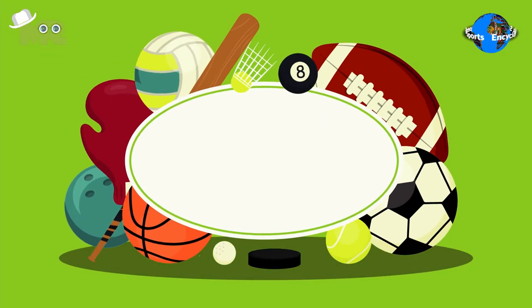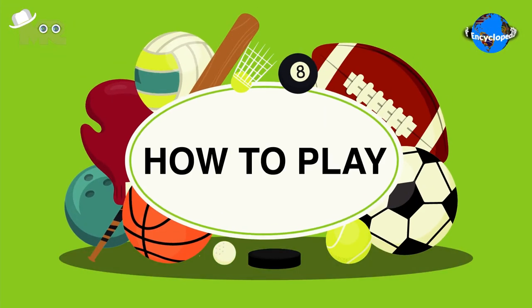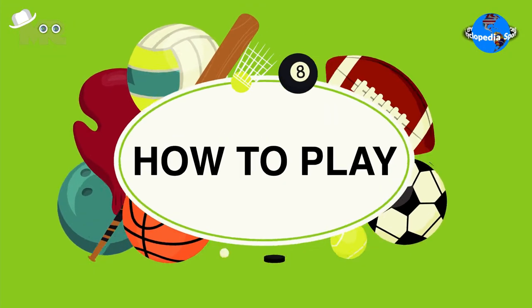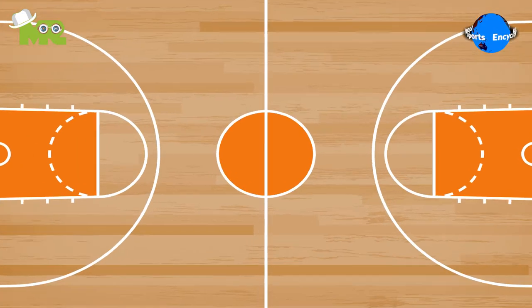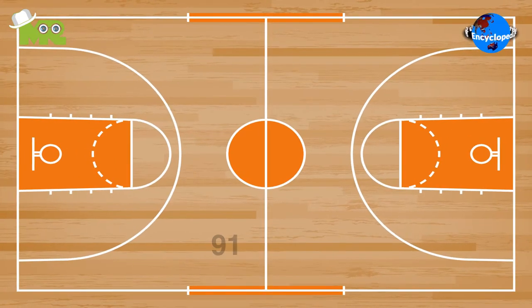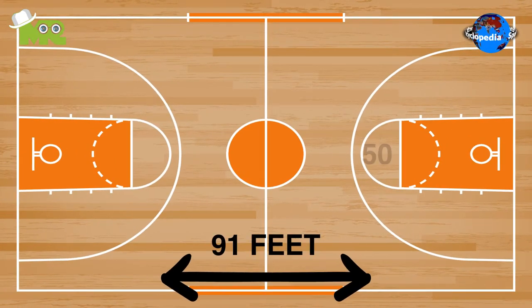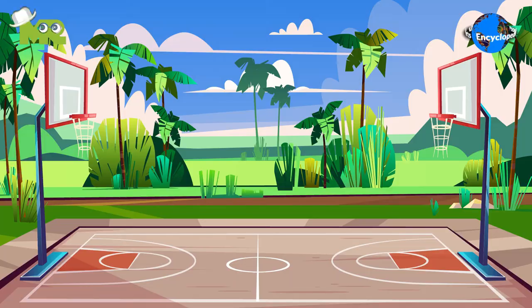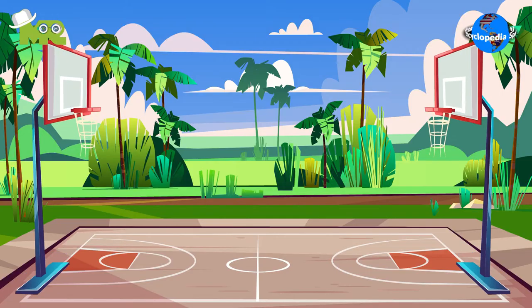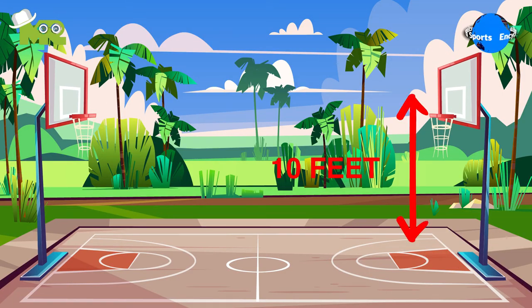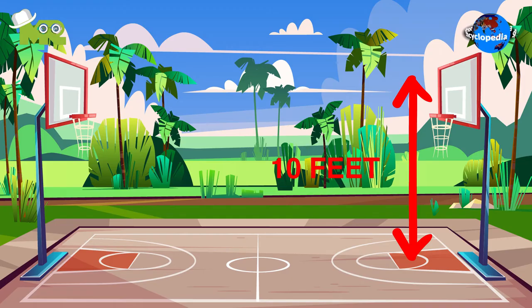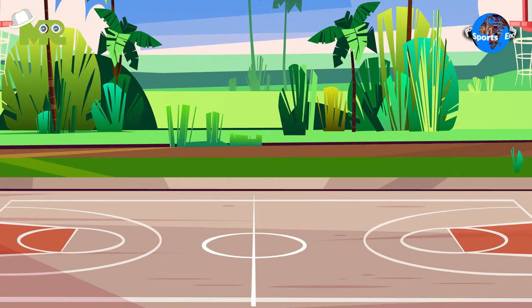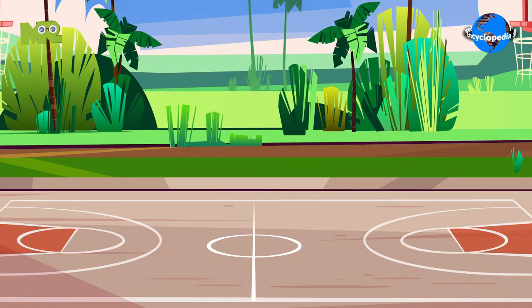Now let's talk about how to play basketball. Basketball is played on a rectangular court measuring 91 feet long and 50 feet wide. At both ends of the court, there are two baskets, both at 10 feet in height. In the middle of the court, there is a line with a small circle where the game begins.